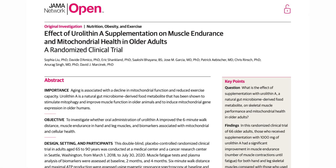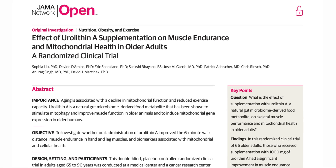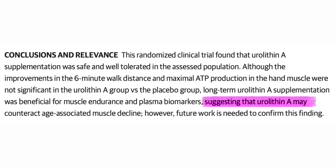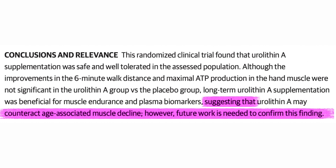Another study, published in a journal of the American Medical Association earlier this year, looked at supplementation of urolithin A in older adults, examining muscle endurance and mitochondrial health in a randomized clinical trial. They concluded that long-term supplementation was beneficial for muscle endurance and plasma biomarkers, suggesting that urolithin A may counteract age-associated muscle decline. However, future work is needed to confirm this finding. We definitely need more randomized controlled trials and stronger data in human beings, but all of this preliminary data is very exciting and there's a definite strong signal that this compound is beneficial for overall human health.